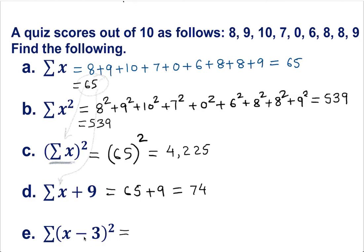Remember, we must take care of what's inside the parenthesis. We must subtract 3 from each score. For example, 8 minus 3, 9 minus 3, 10 minus 3, 7 minus 3, 0 minus 3, and so on. Then finally we square.